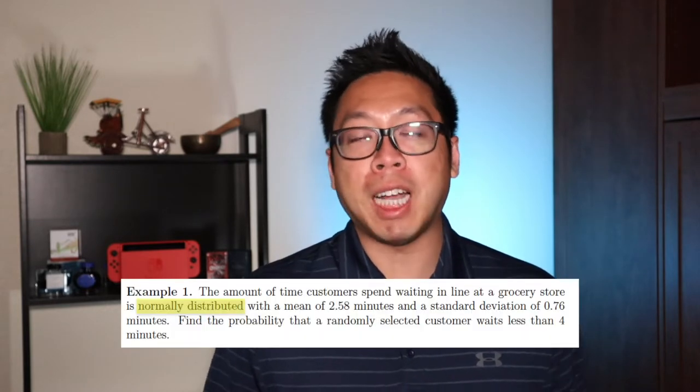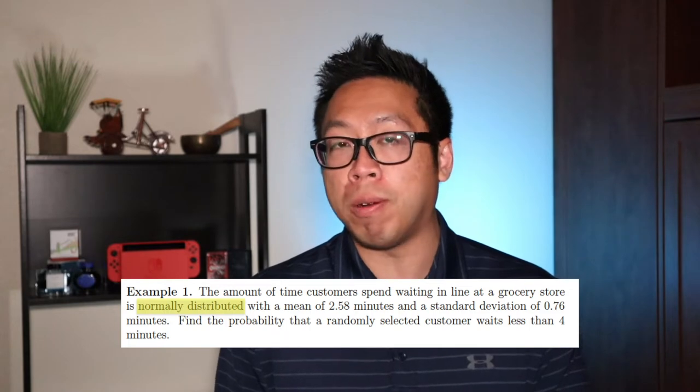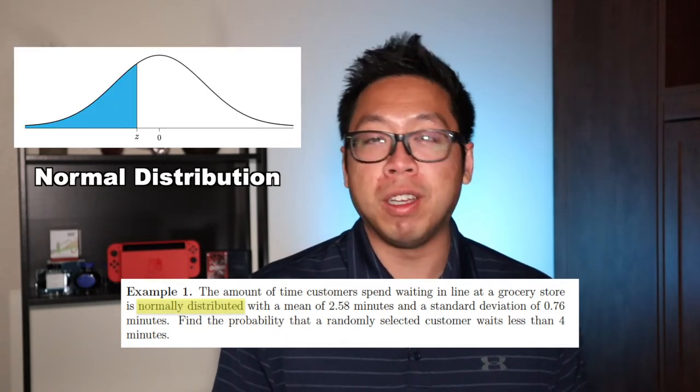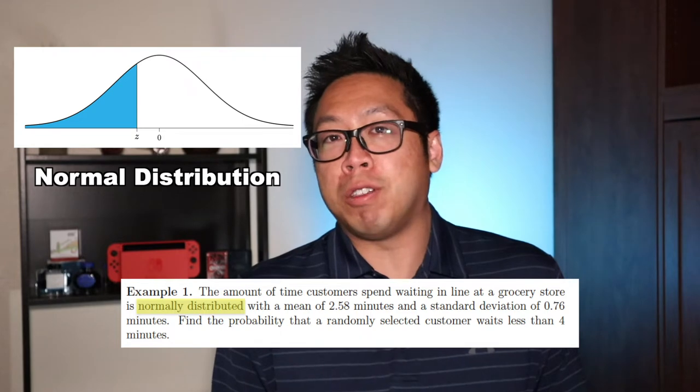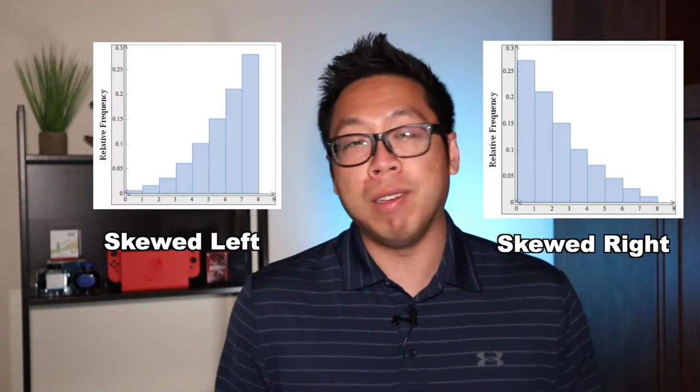In the last lecture, we used the normal distribution to answer some questions, and I was careful to always include the words 'normally distributed,' because the tools PNORM and QNORM in R only work if our distribution is normal. Now the question is, what do you do when your distribution is not normal? We've seen distributions that were skewed left or skewed right, and in statistics we often don't even know what the distribution looks like.